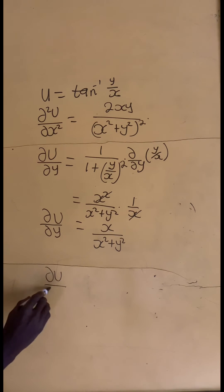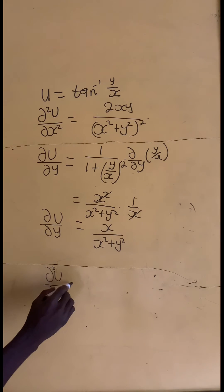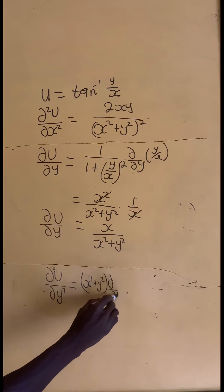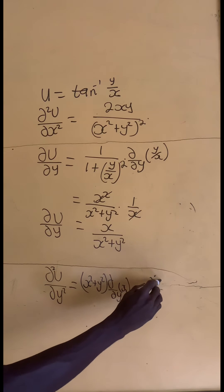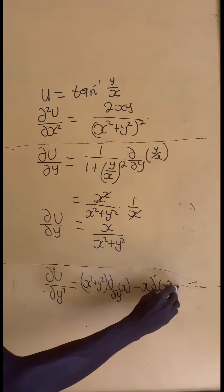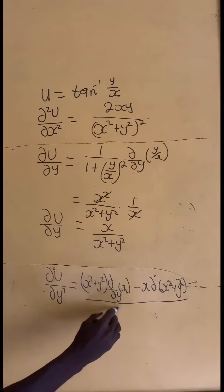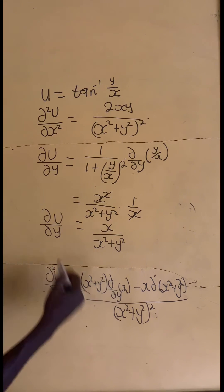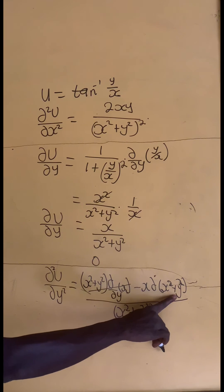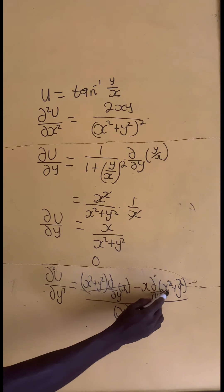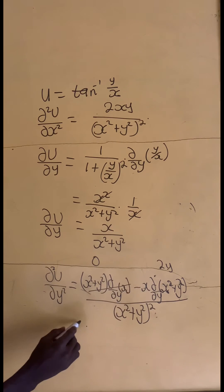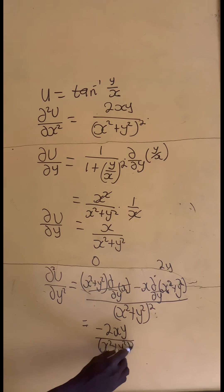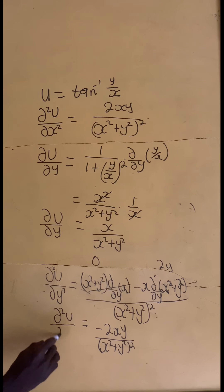Now let us take the second derivative. Del squared u on del y squared, using the quotient rule: we take x squared plus y squared times the partial derivative of the numerator x with respect to y, minus the numerator x times the partial derivative of the denominator x squared plus y squared with respect to y, all divided by x squared plus y squared all squared. Differentiating x partially with respect to y gives 0, so the first term is 0. Differentiating x squared partially with respect to y is 0; differentiating y squared partially with respect to y gives 2y. So we have minus x times 2y equals minus 2xy, all divided by x squared plus y squared, all squared. This gives del squared u on del y squared.